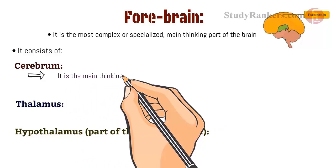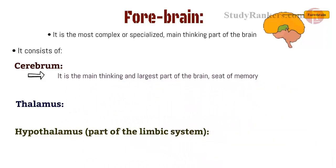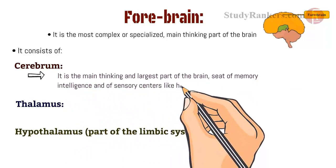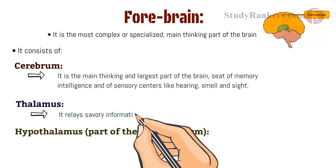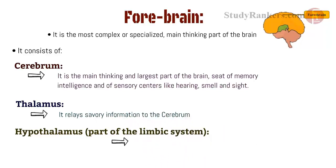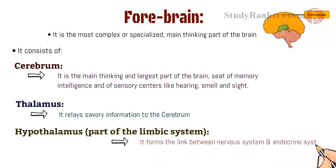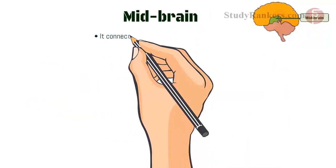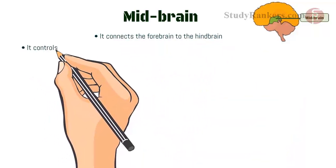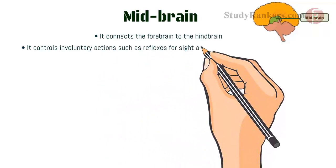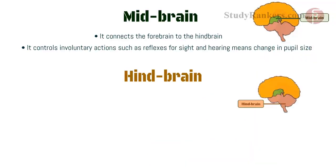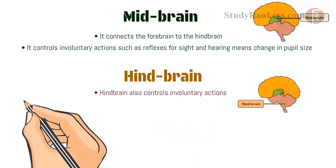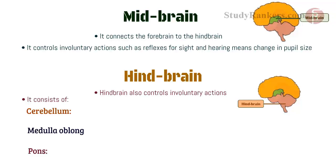The cerebrum is the main thinking and largest part of the brain — the seat of memory, intelligence, and sensory centers like hearing, smell, and sight. The thalamus relays every piece of information to the cerebrum. The hypothalamus forms the link between the nervous system and the endocrine system. The midbrain connects the forebrain to the hindbrain and controls involuntary actions such as reflexes for sight and hearing, including changes in pupil size. The hindbrain also controls involuntary actions and consists of the cerebellum, pons, and medulla oblongata.